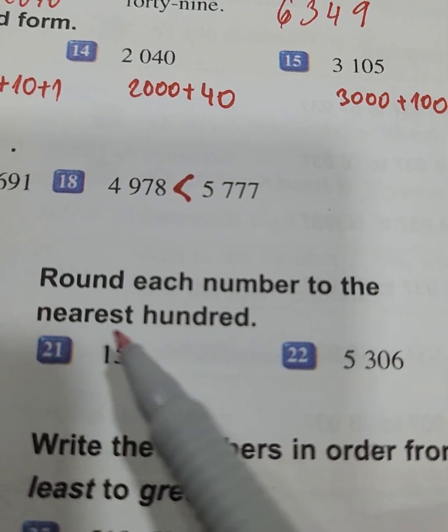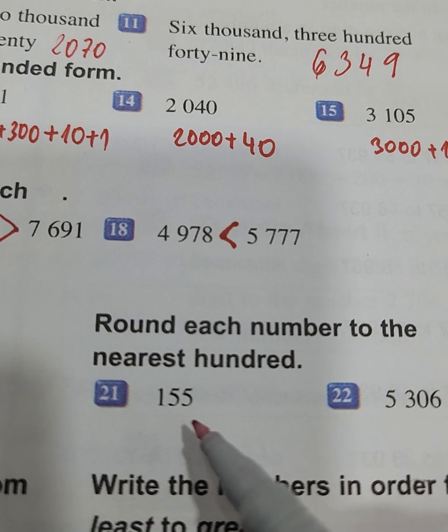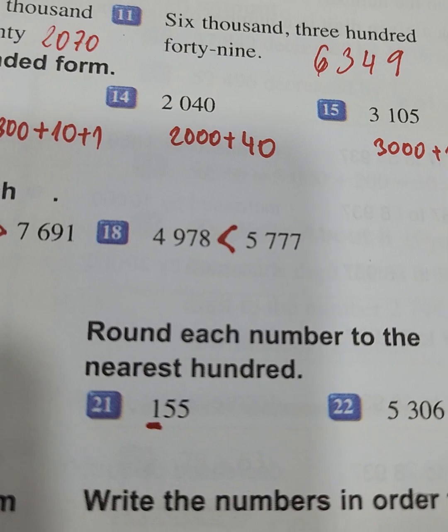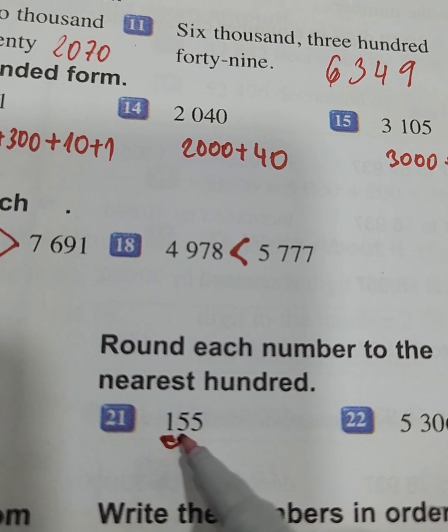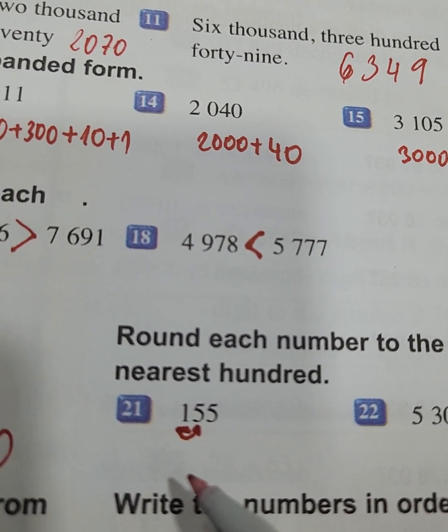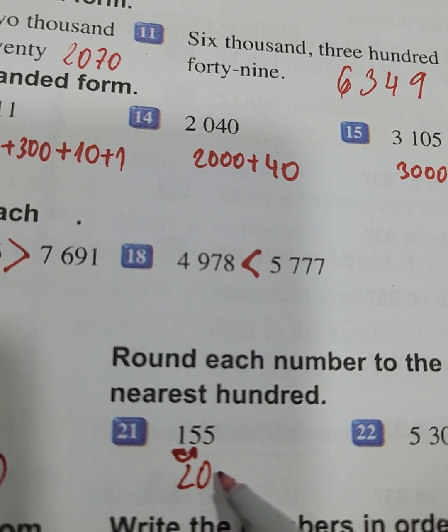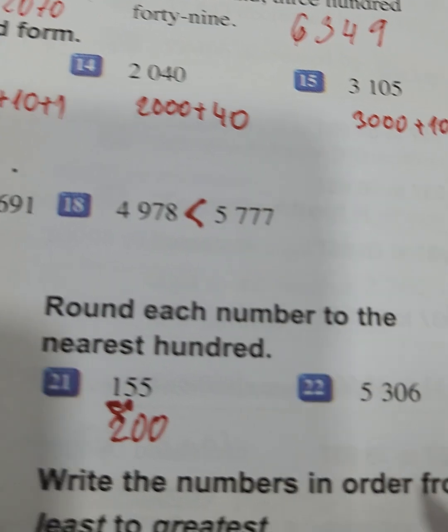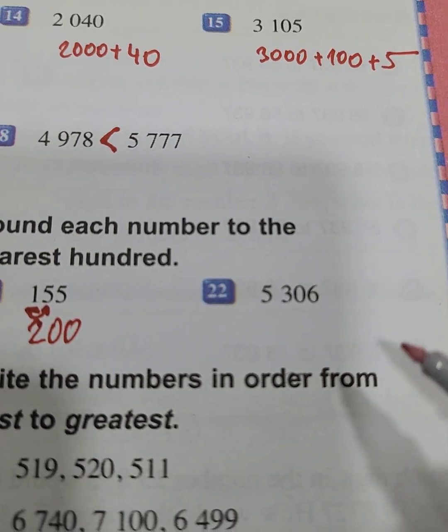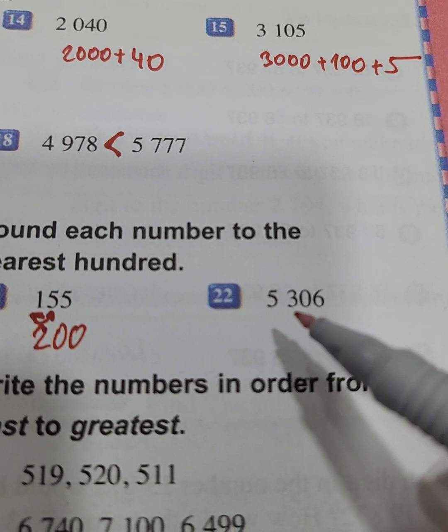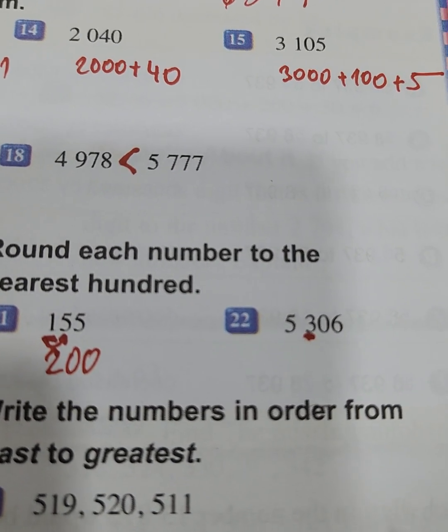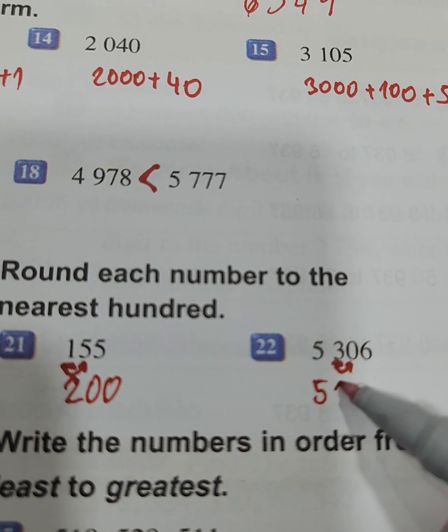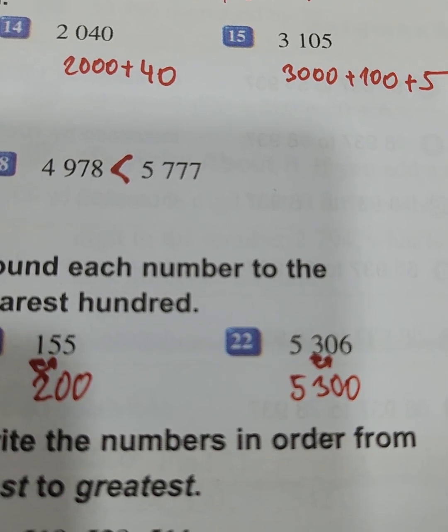Here, round each number to the nearest 100. Where is the place of 1, place of 10, and place of 100? We must round to the nearest 100. We will round 155 to the nearest 100 as 200. For 5306, the hundreds place is here. After it comes 0, so we will stay at the place of 5300.